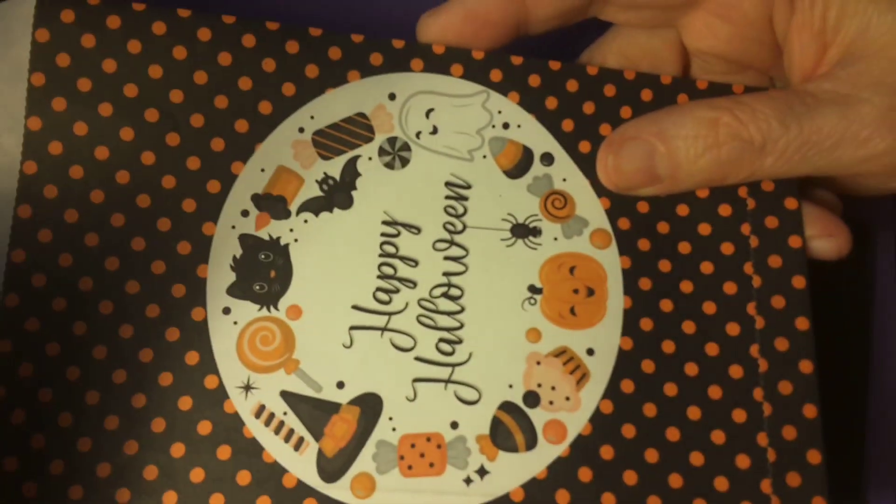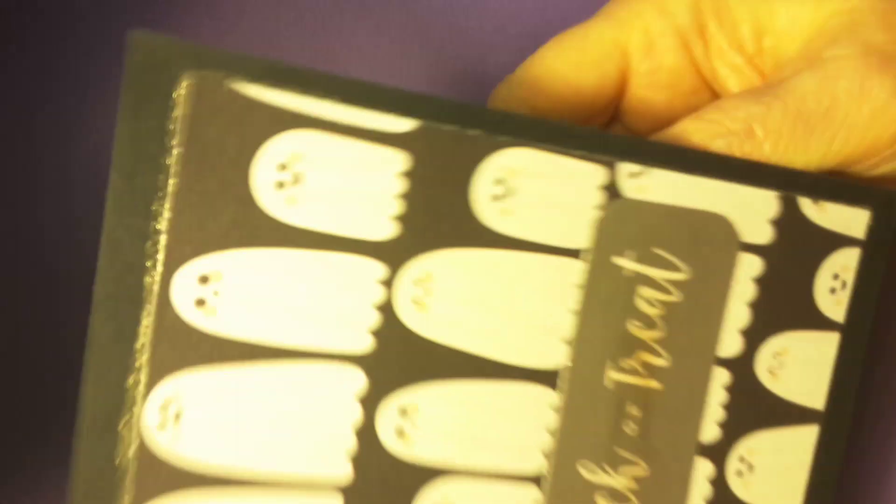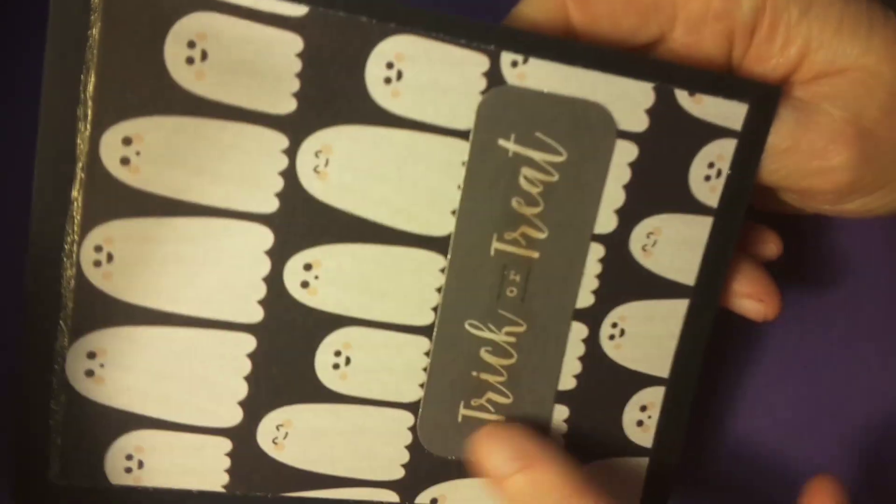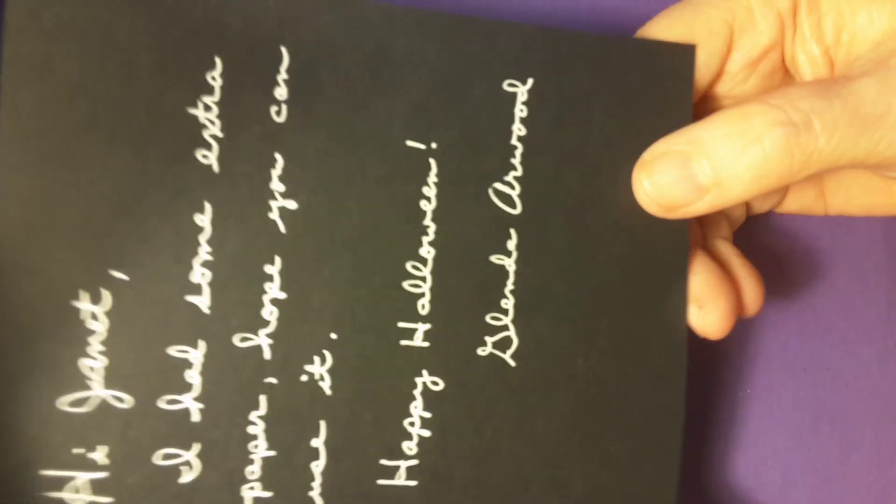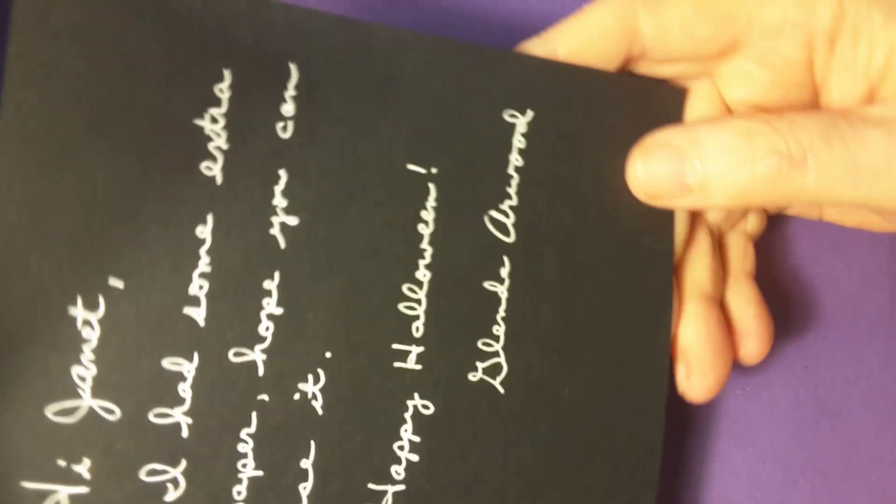Here's a trick-or-treat bag. It says Happy Halloween. It's on both sides. And she made me a card. It's a ghost. It says Trick-or-treat. It says, Hi Janet, I had some extra paper, hope you can use it. Happy Halloween. Glenda Arwood. Well, thank you Glenda. I really appreciate all that. It's really nice.